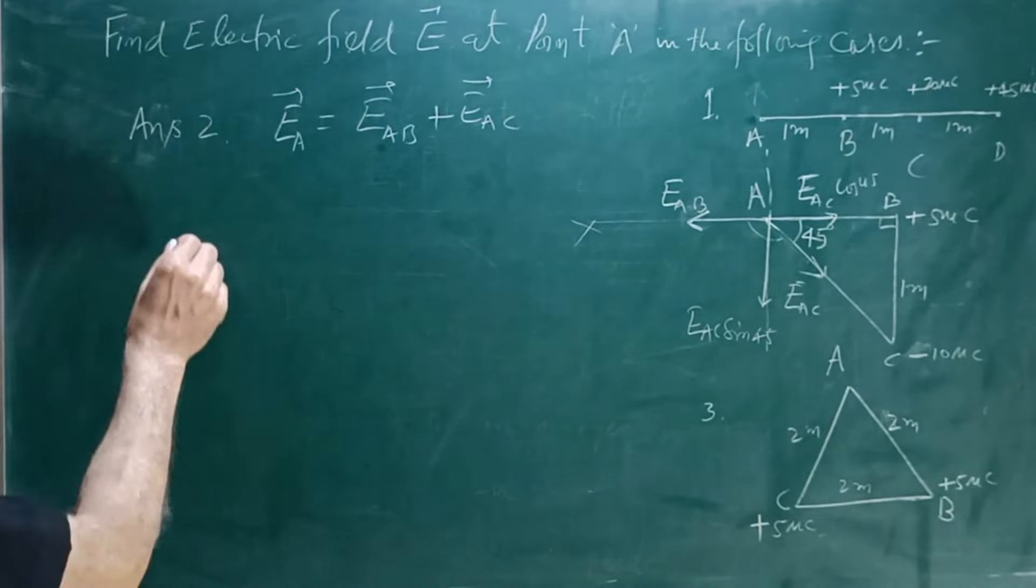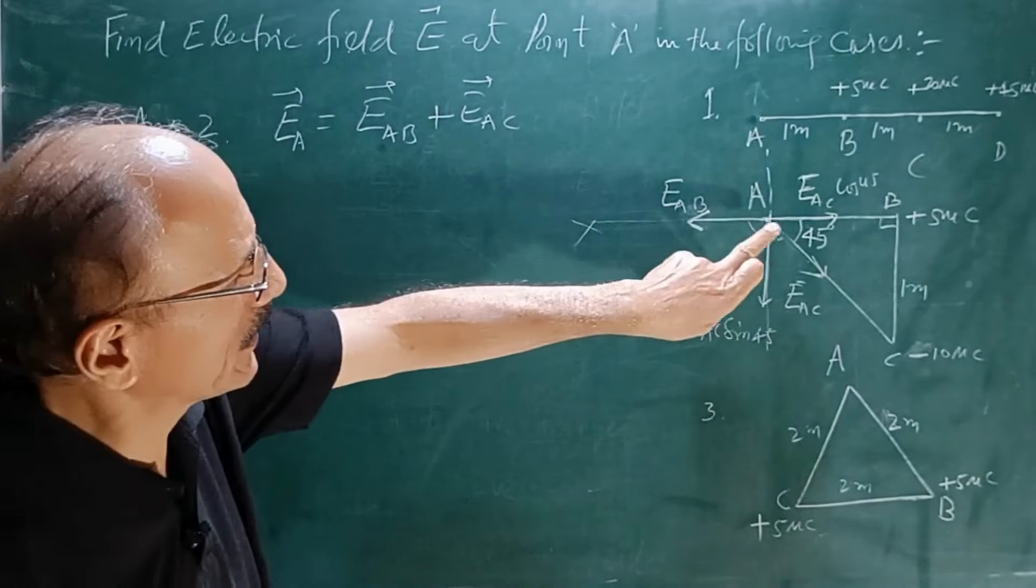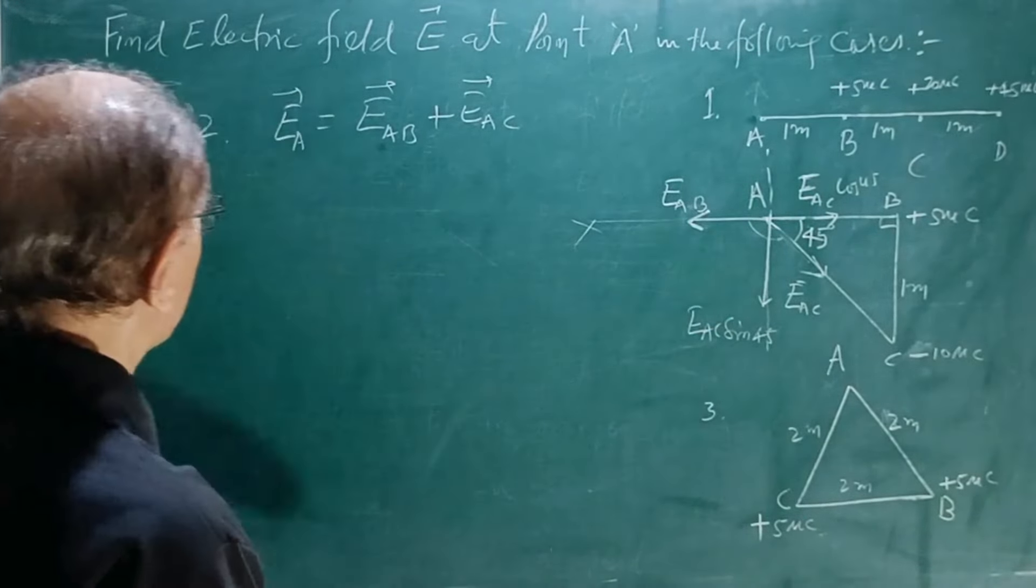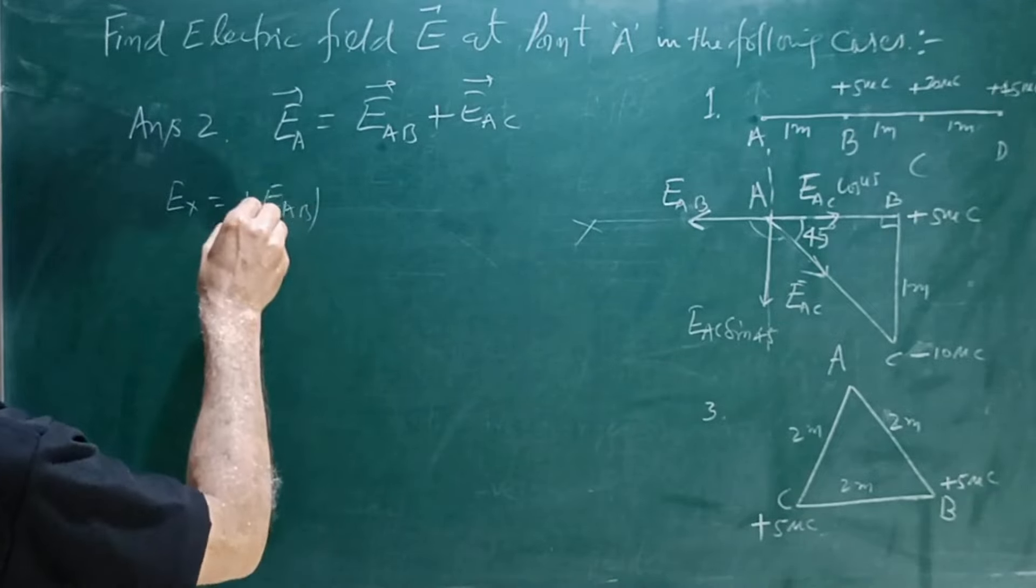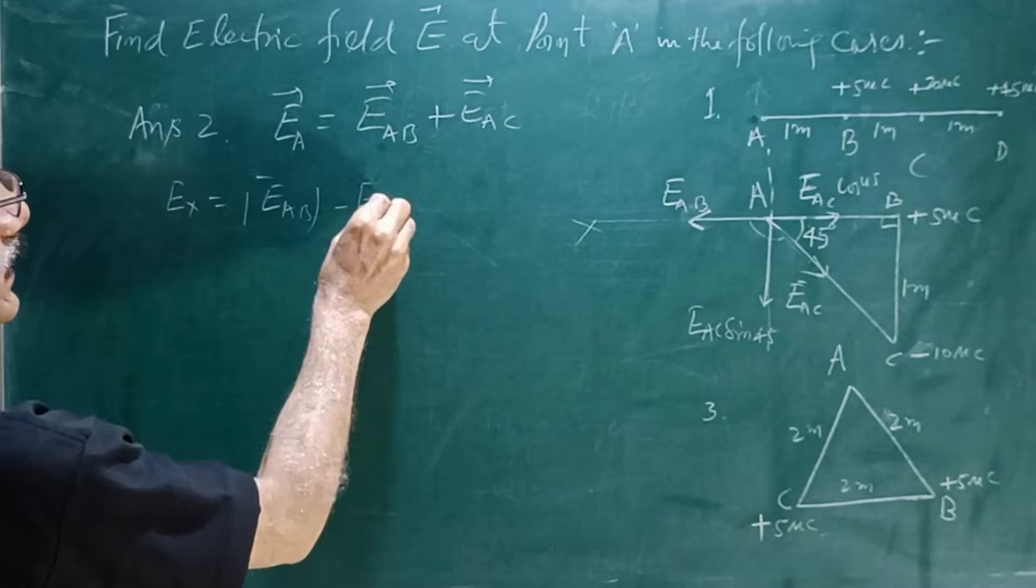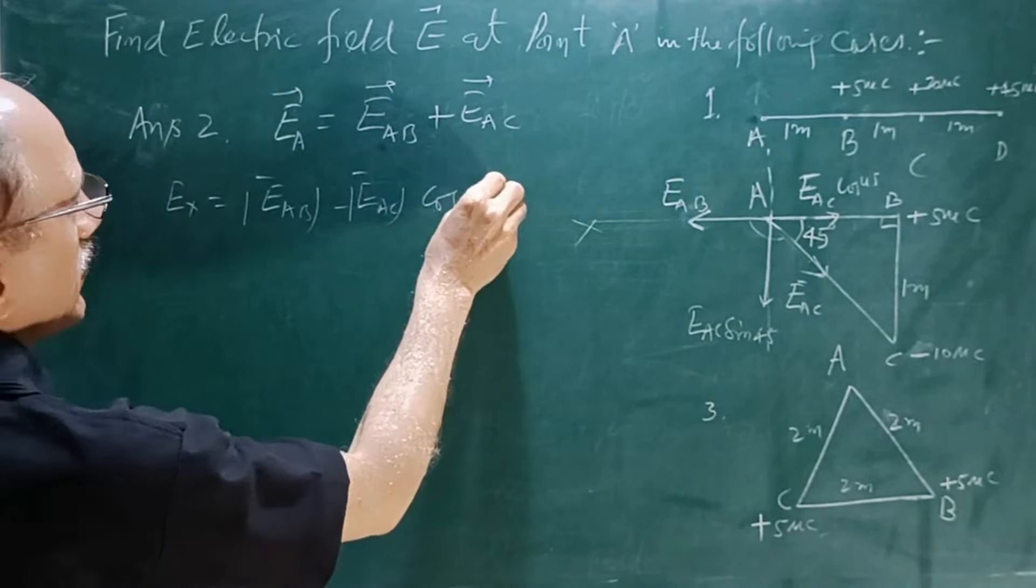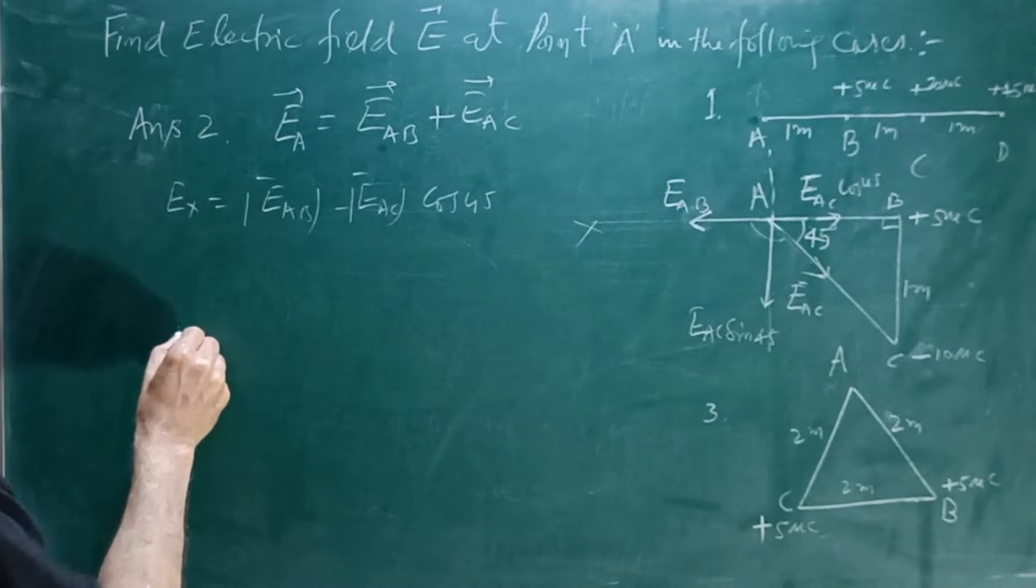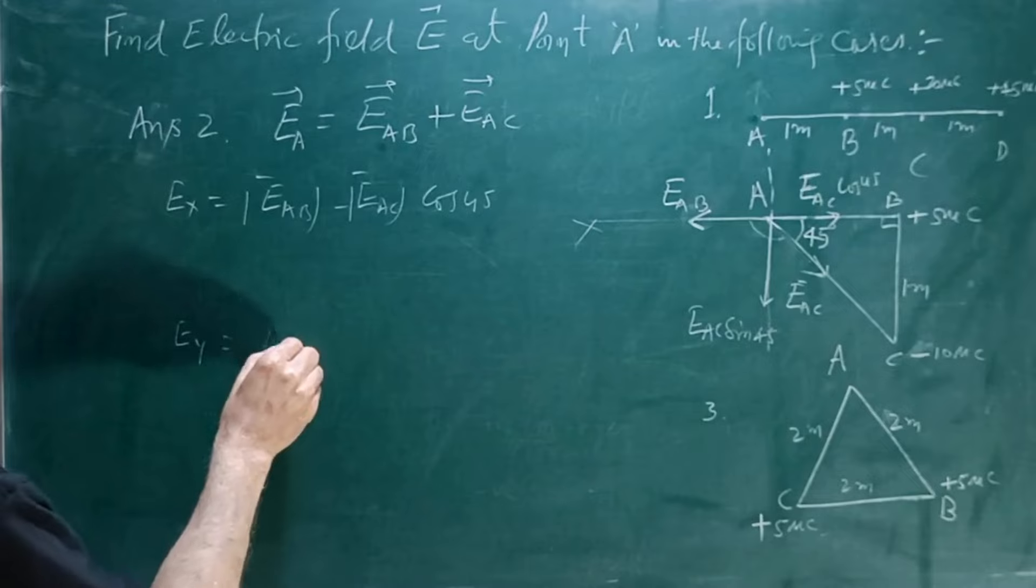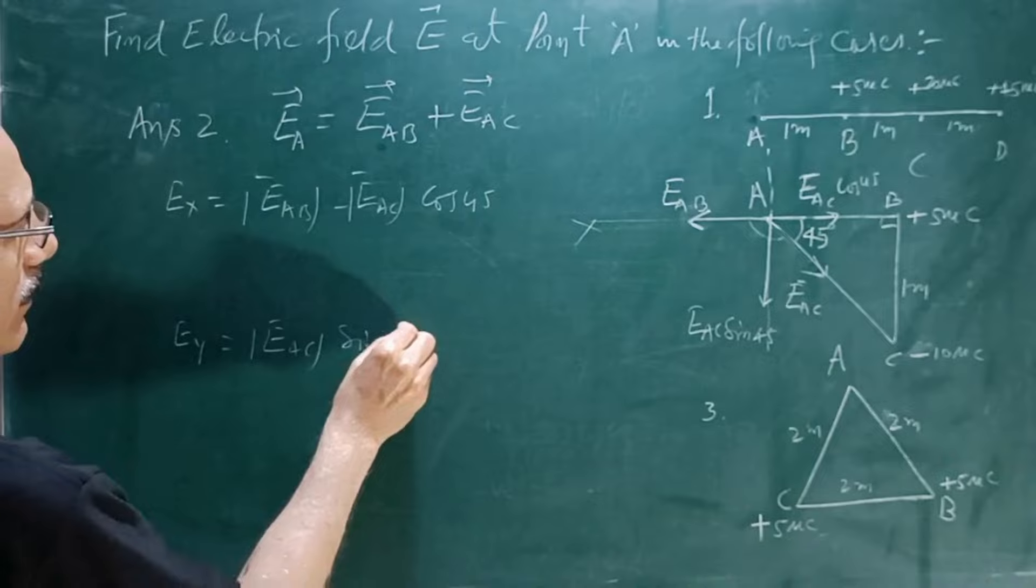Now we will find EX first. Since these two are in the opposite direction, we will just simply subtract their magnitude. EX is equal to EAC mod cos 45. EY will be equal to EAC mod sin 45.